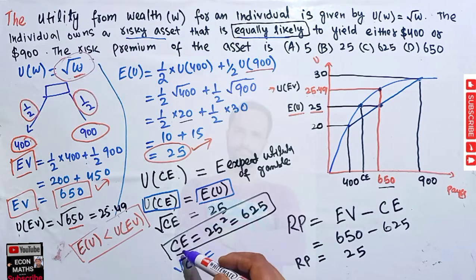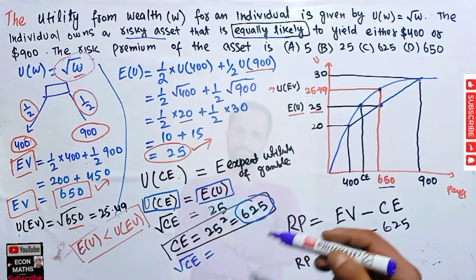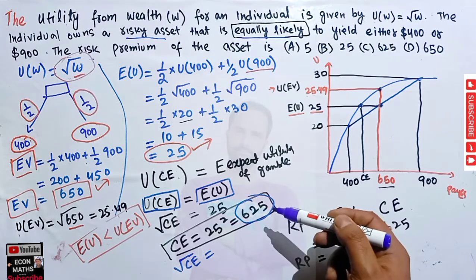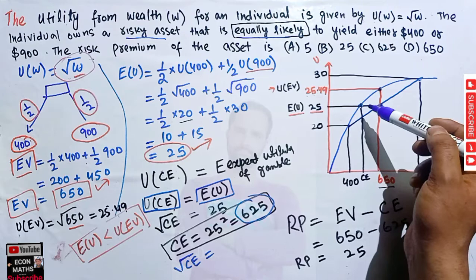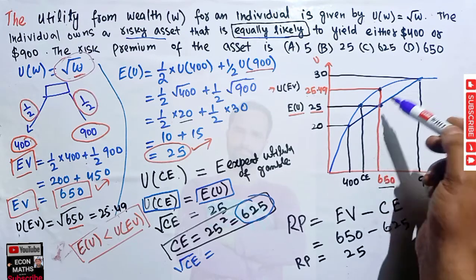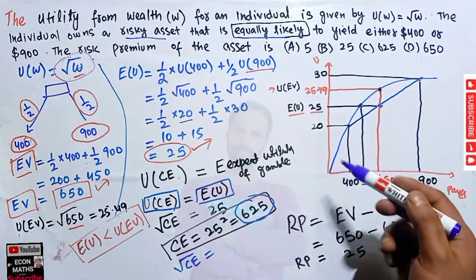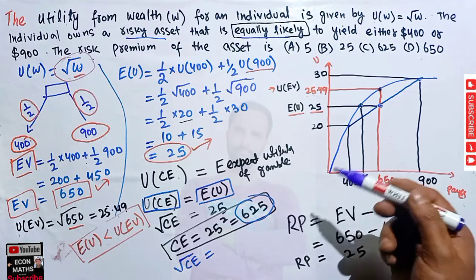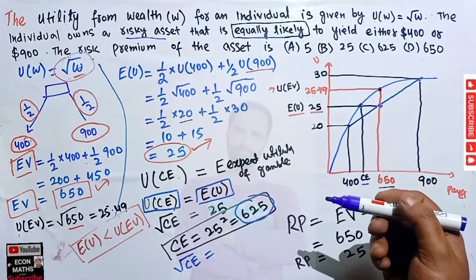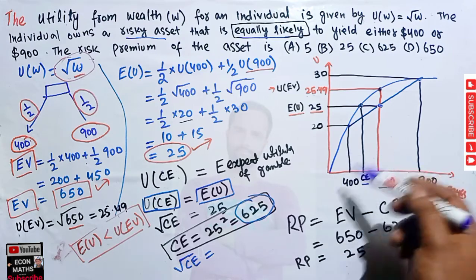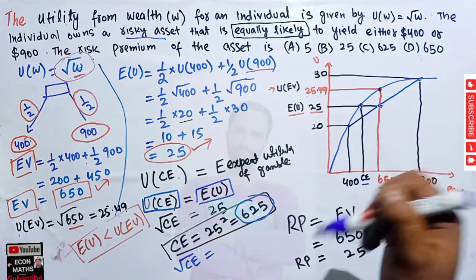Since √CE = 25, squaring both sides gives CE = 625. This means if we give that individual 625 dollars, he will be indifferent between the gamble and the certain amount. The certainty equivalent is the amount of sure cash that would make an individual indifferent between the certain amount and the lottery.